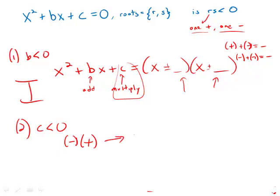And that necessarily would mean that we have one positive root and one negative root. And if we have one positive root, one negative root means the product of the roots will be less than zero.